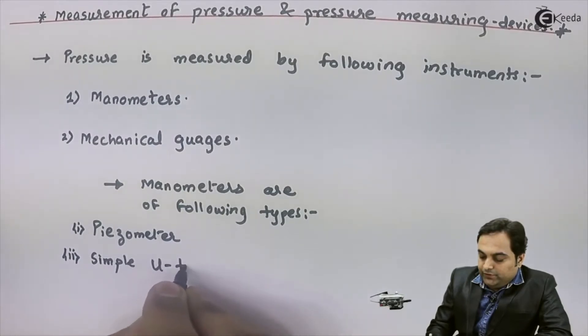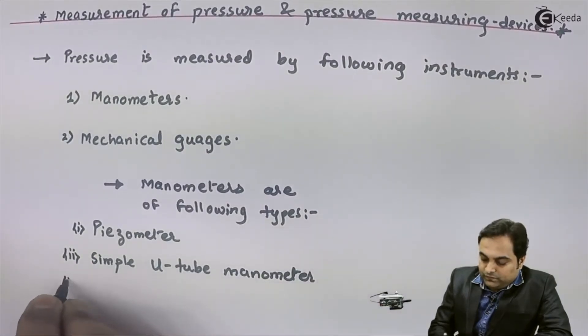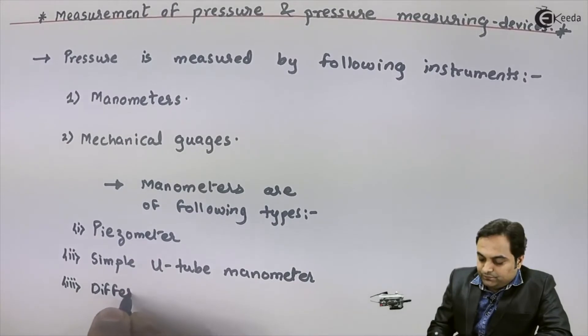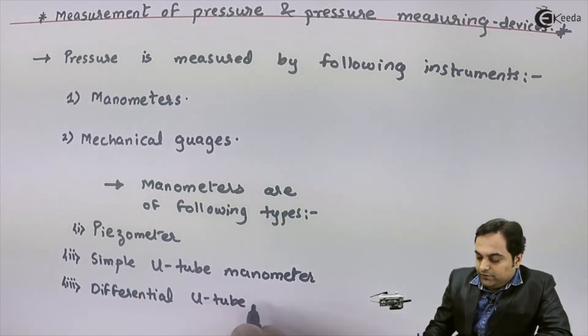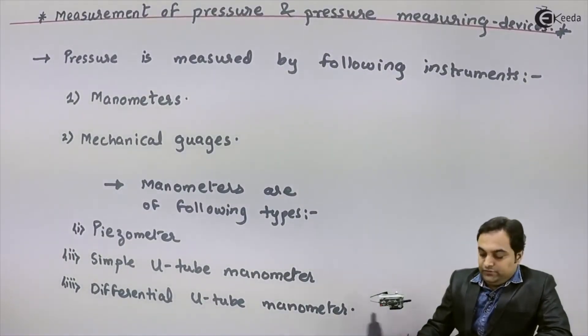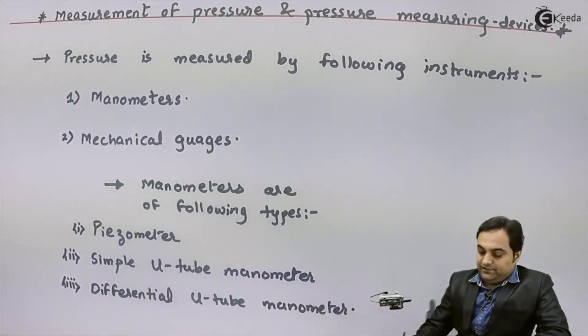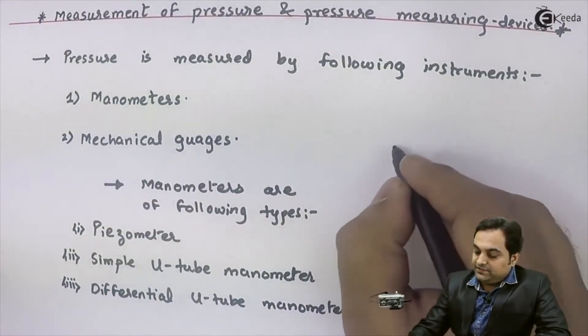u-tube manometer, next there is differential u-tube manometer. So these are the common varieties of manometers. Next, mechanical gauges